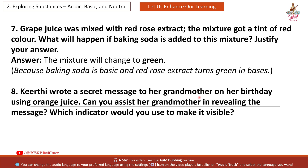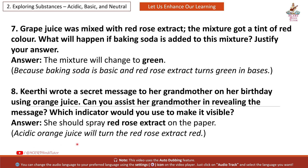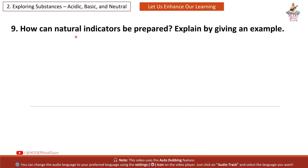Question 8: Kirti wrote a secret message to her grandmother on her birthday using orange juice. Can you assist her grandmother in revealing the message? Which indicator would you use to make it visible? Answer: She should spray red rose extract on the paper. Acidic orange juice will turn the red rose extract red.